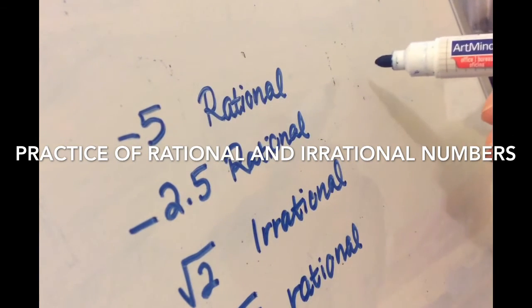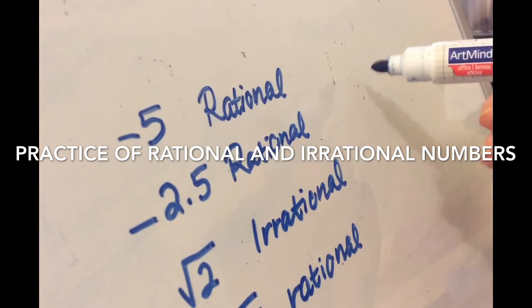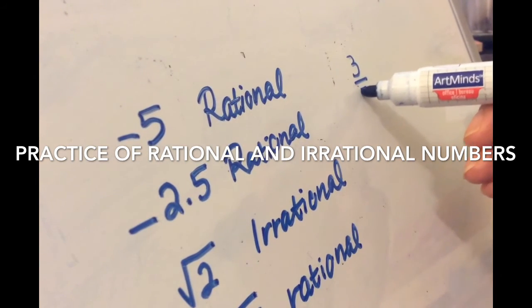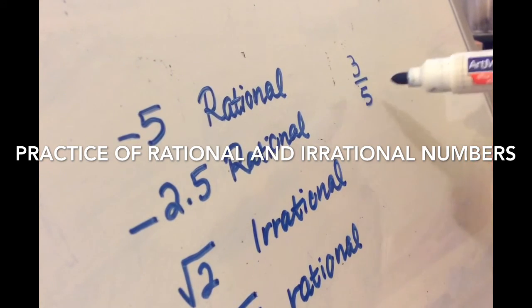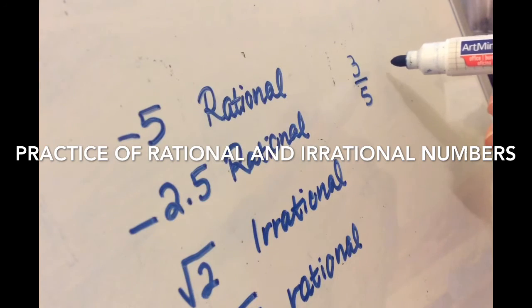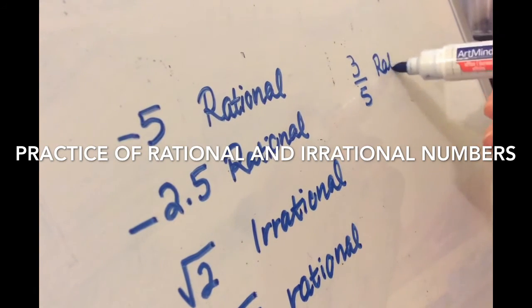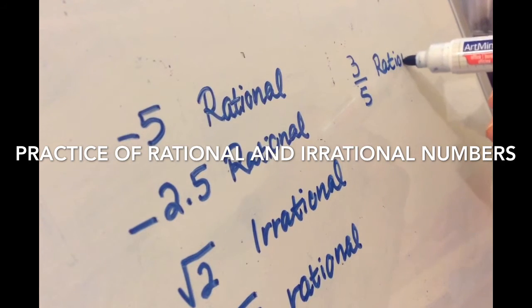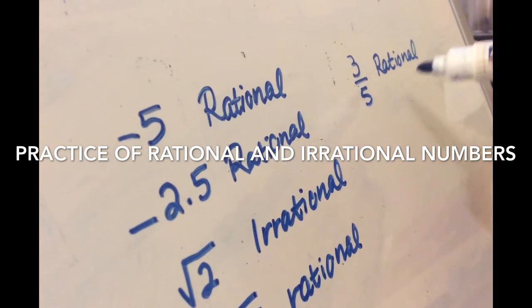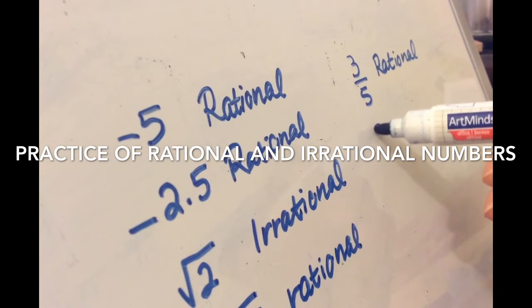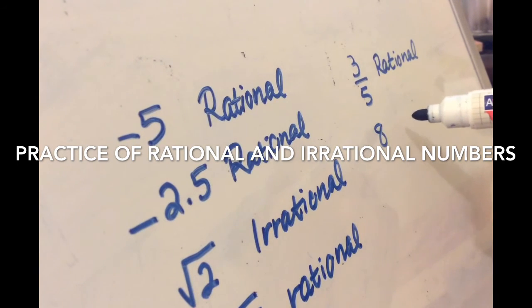What is 3 over 5? It's rational. What is 8? It's rational.